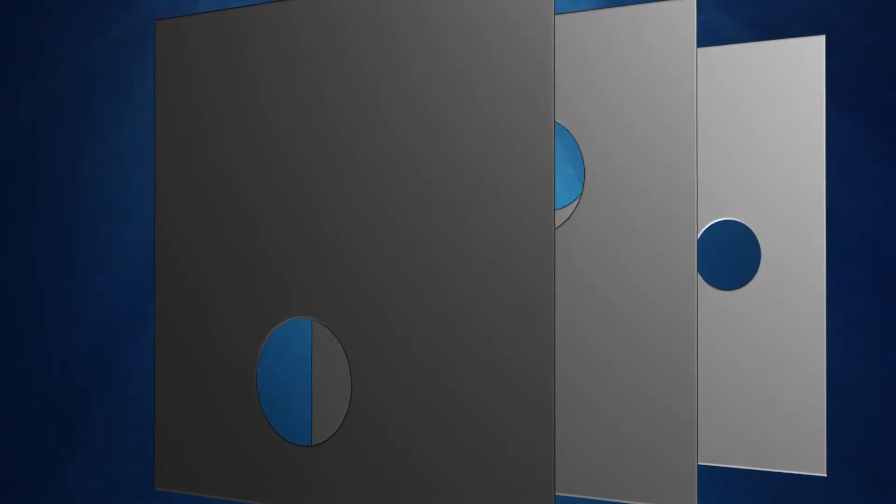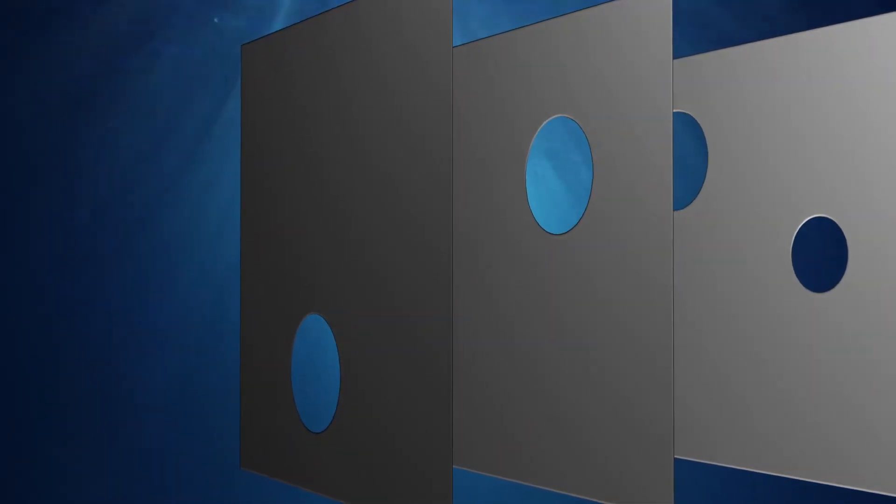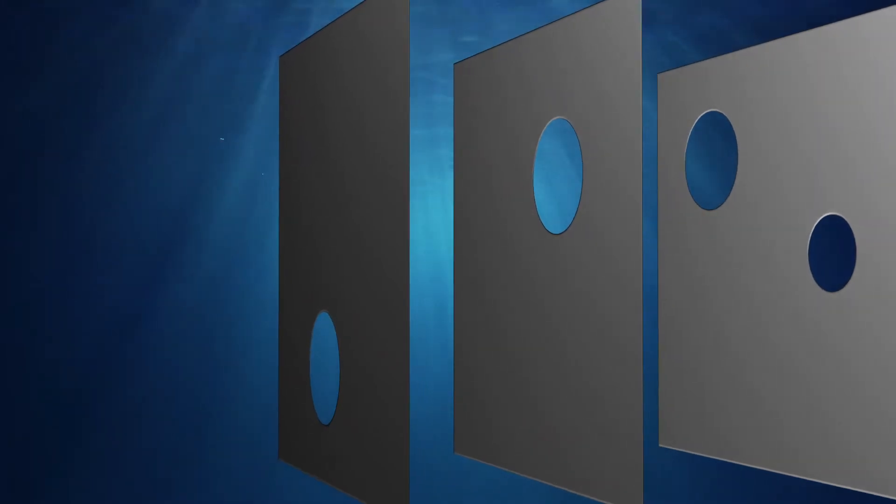Take the Swiss cheese model. It explains the likelihood of an event to occur. Each slice's holes need to perfectly align in a straight line of sight for the event to pass through and become a reality.